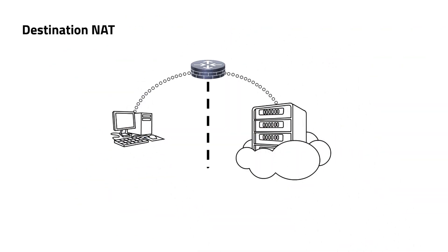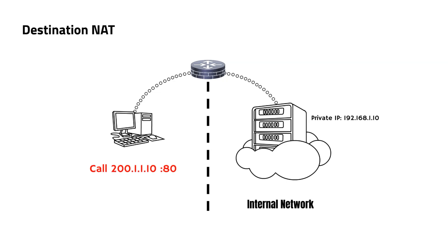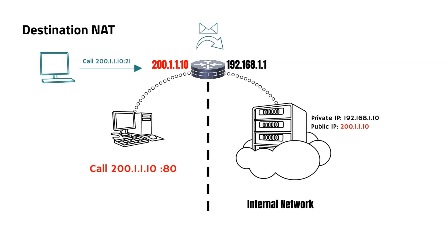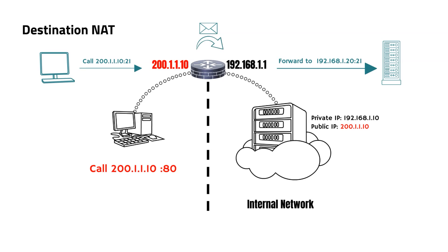Now let's dive into destination NAT. Imagine a situation where we want external users to access an internal web server with a private IP of 192.168.1.10. To make this possible, these users will connect via the public IP 200.1.1.10, which is the public-facing IP of the router. DNAT is a technique that maps this external public IP to the internal private IP as packets pass through the router or firewall. Moreover, in destination NAT, a single public IP can manage traffic from multiple ports, redirecting each to different internal devices. This flexibility allows multiple services to be hosted behind one public IP, optimizing resource use and simplifying network configurations.